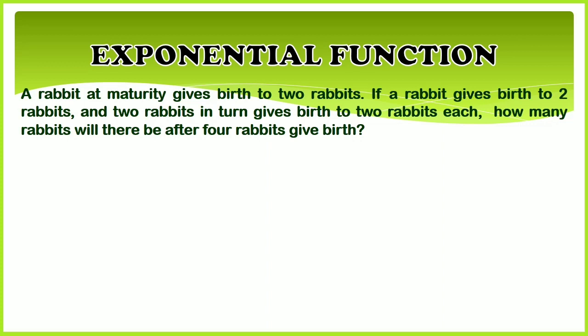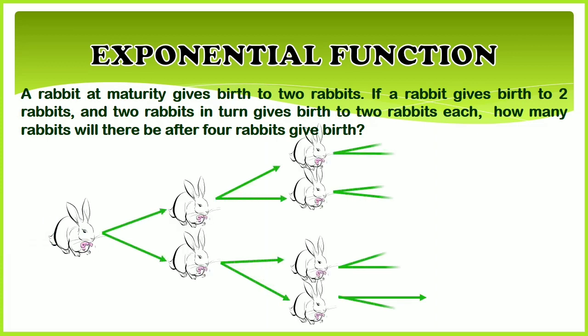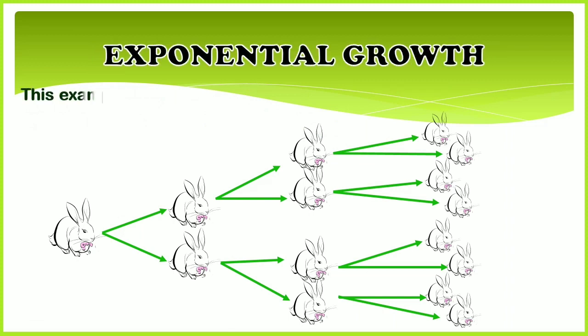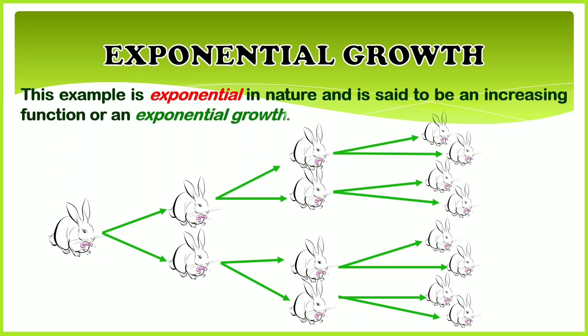Let us figure out the following illustration. This example is exponential in nature and is said to be an increasing function or an exponential growth. What is the domain and the range of the exponential function for this case? The domain of the function is the order of giving birth to the rabbits and the range is two rabbits as the base of the exponential function raised to the domain x. After the first birth, the range is 2^1 equals 2. After the second birth, the range is 2^2 equals 4. After the third birth, the range is 2^3 equals 8. What would be the range after the fourth birth?